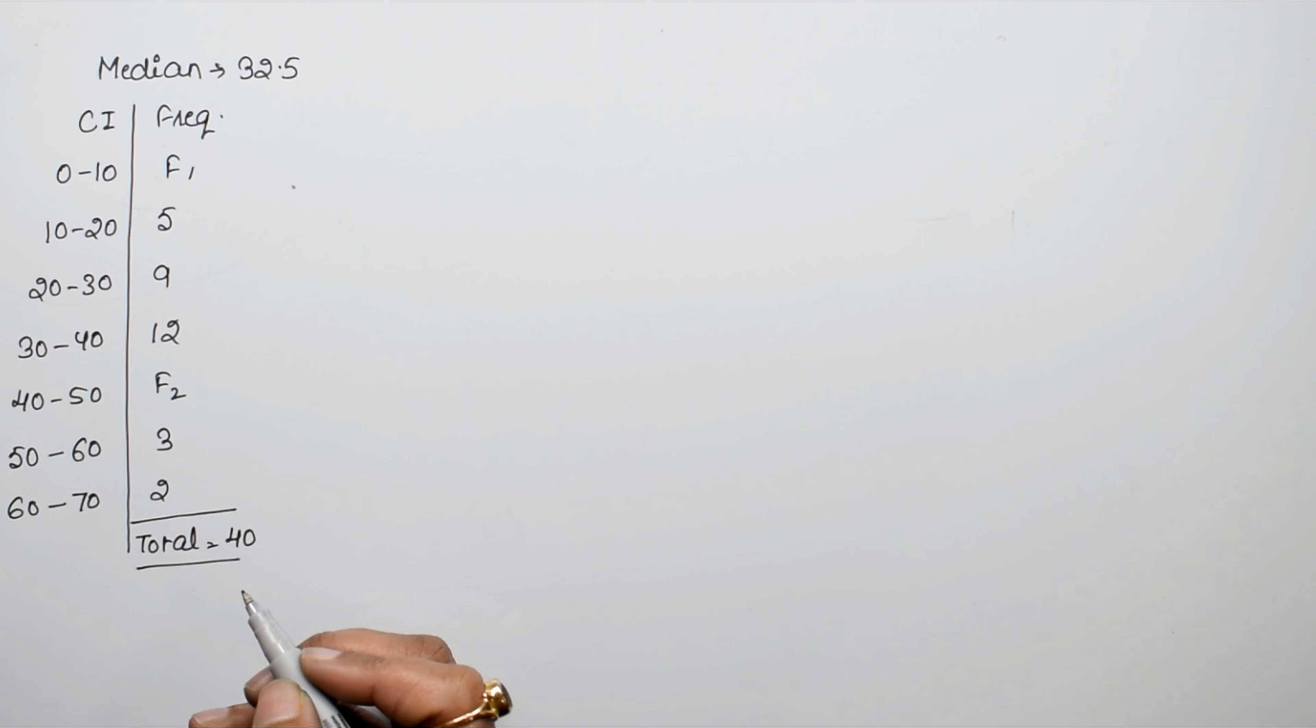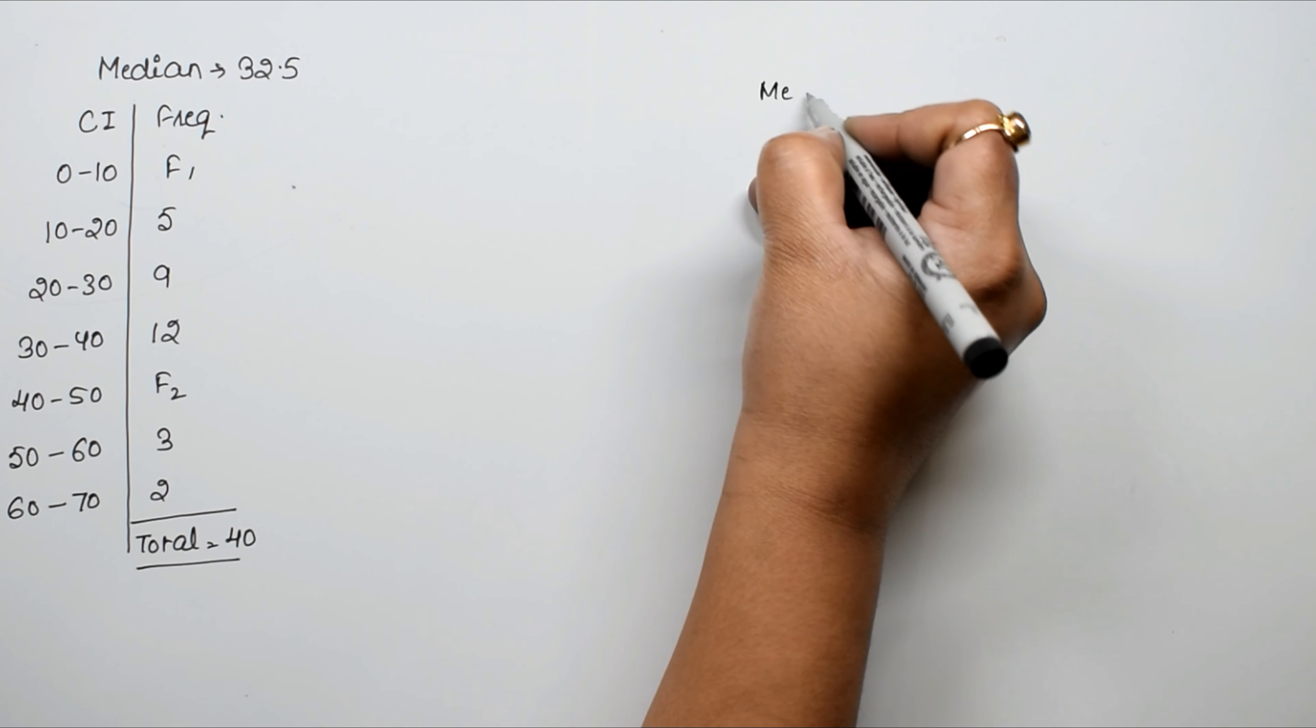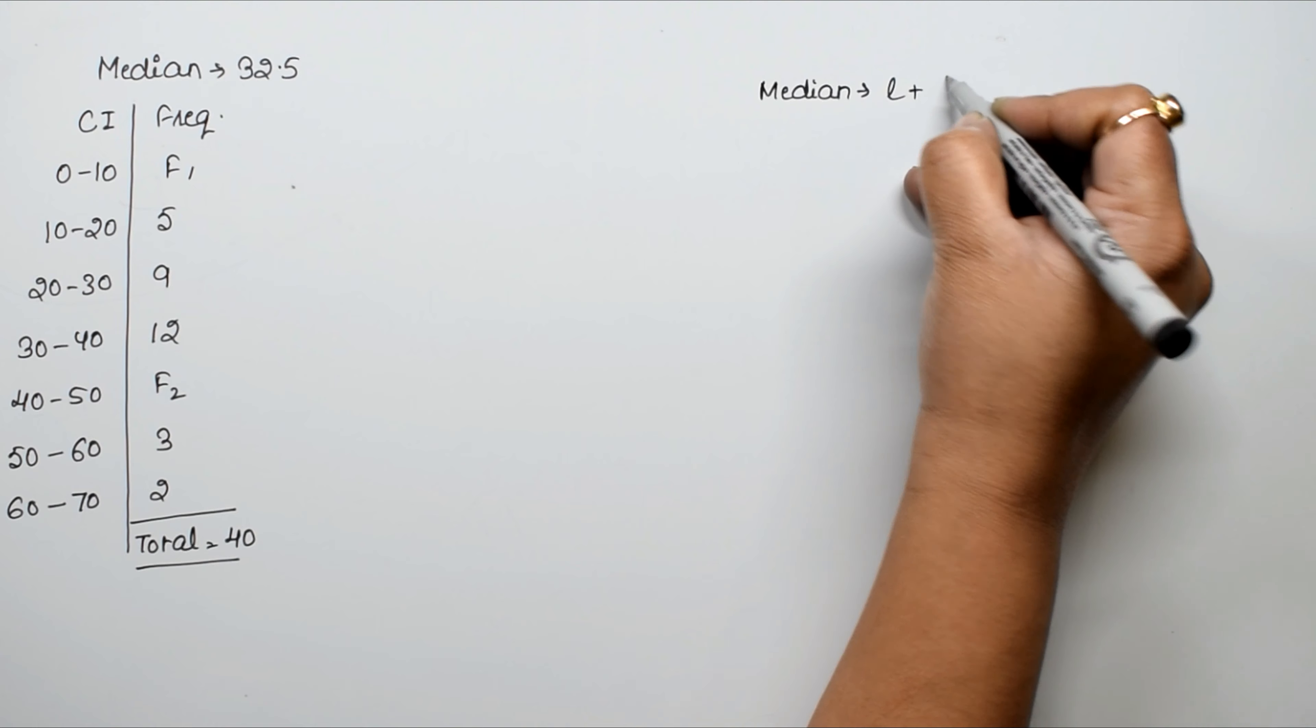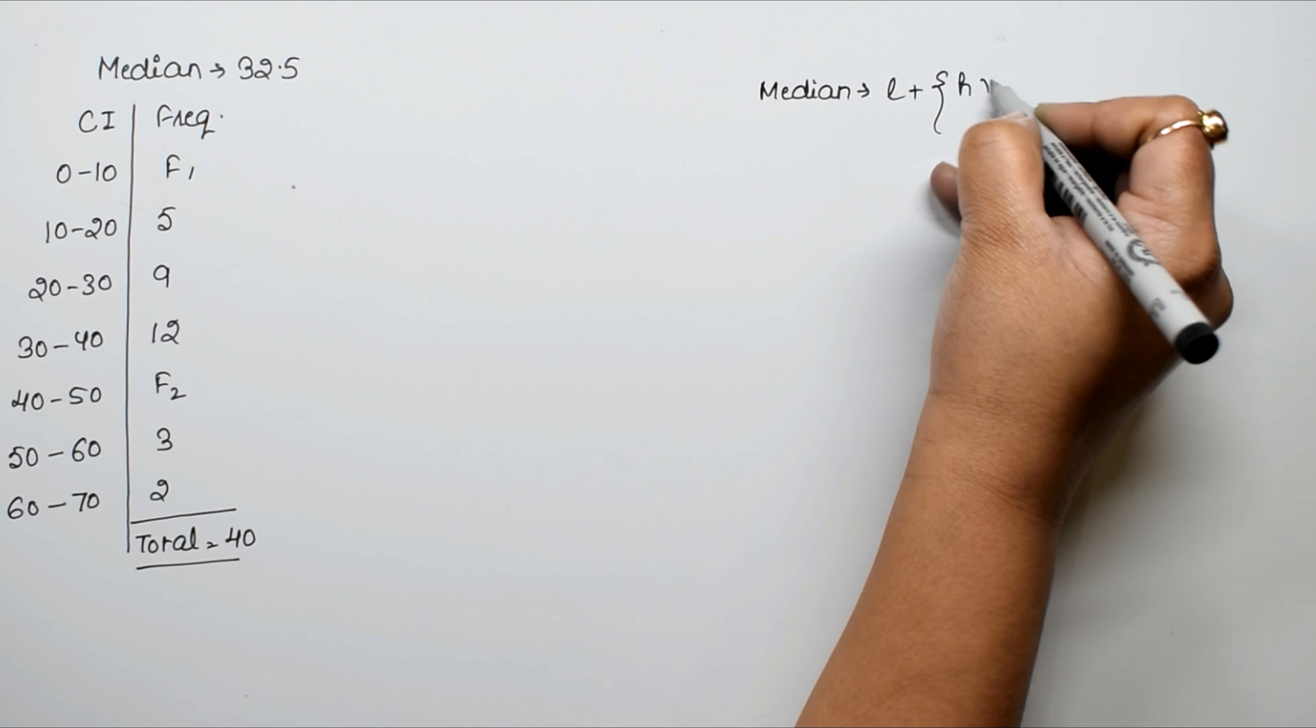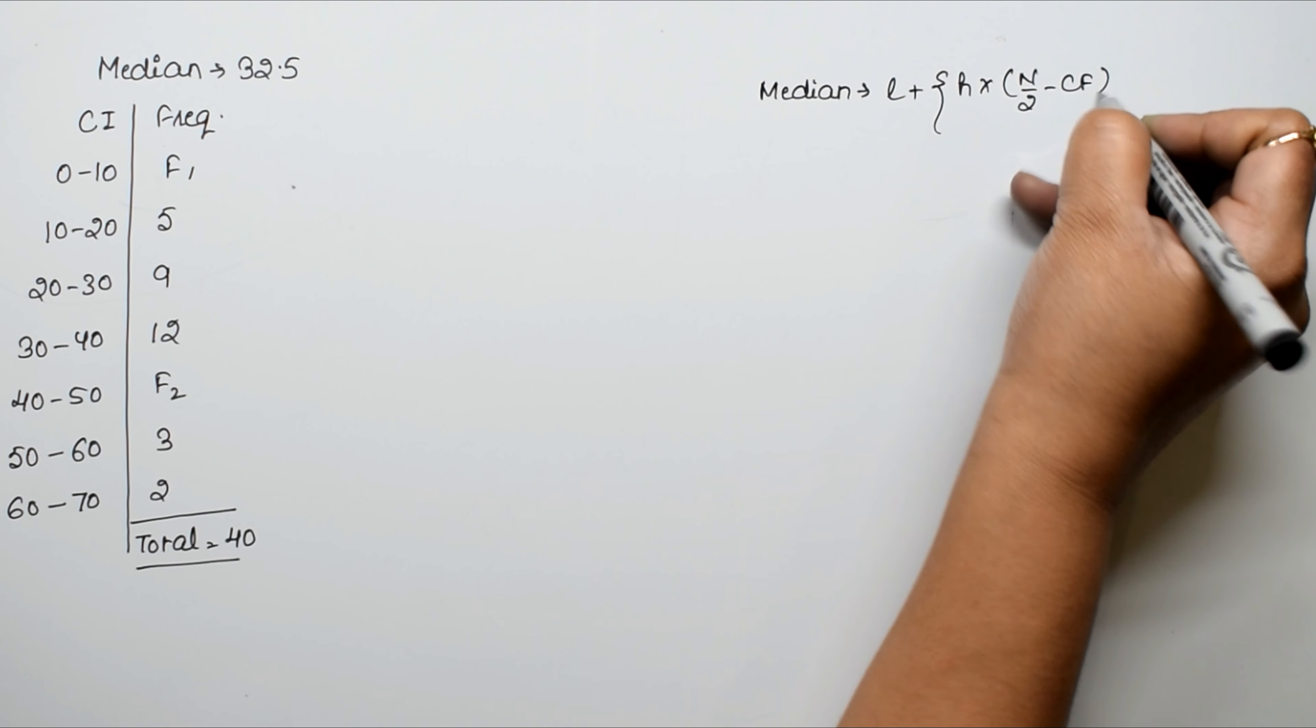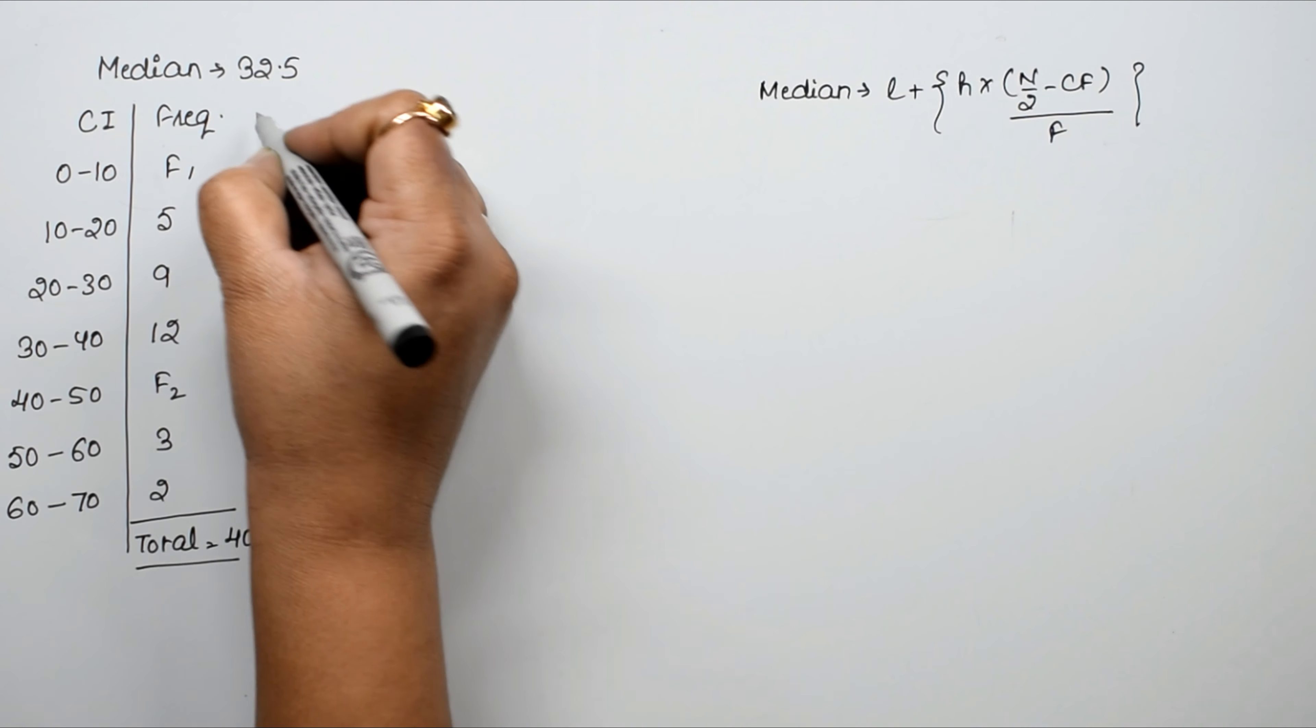So how do we do this? The median formula is: Median equals L plus H into N by 2 minus cumulative frequency upon F.